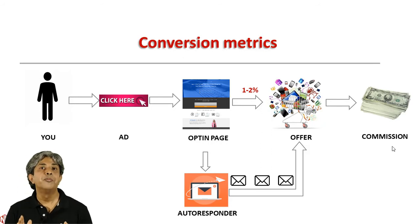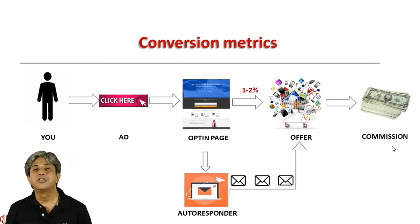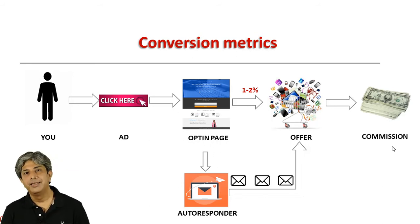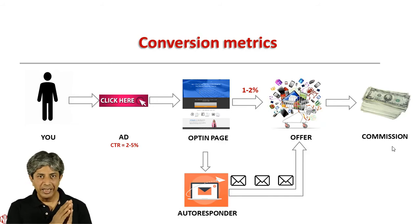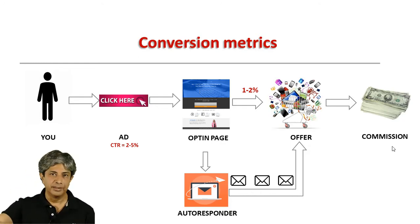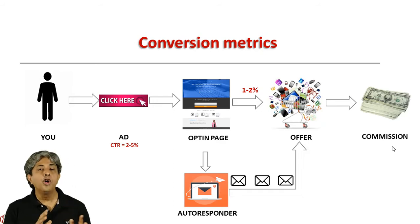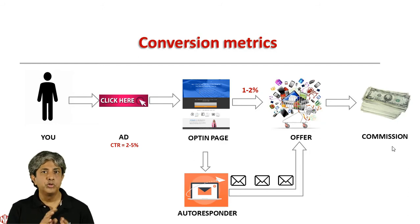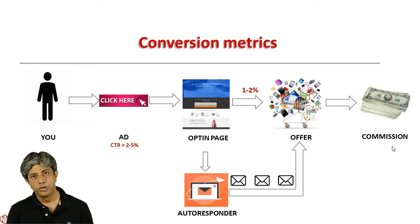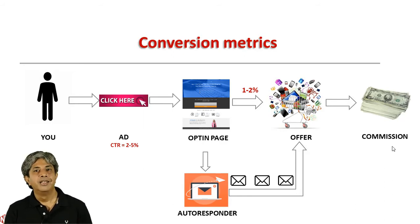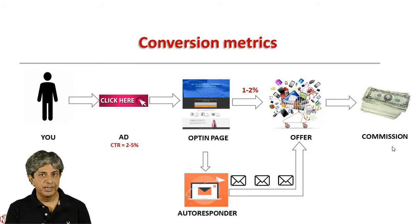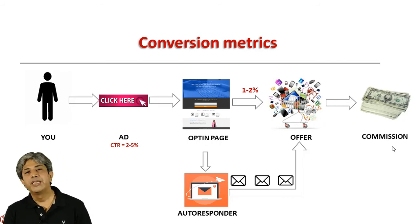The first key number in the funnel is CTR — click-through ratio. If a hundred people see your ad, how many actually click? A norm of two to five percent is considered very good, and that's the range where an effective ad should operate, depending on the category. So let's assume your ad achieves two to five percent CTR and you manage to get a thousand clicks from it.